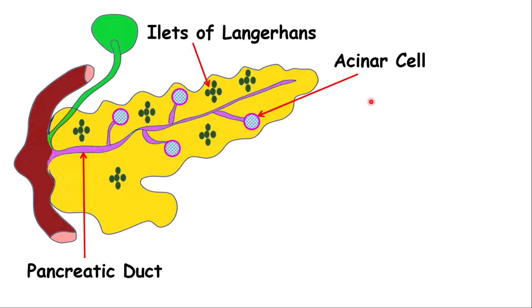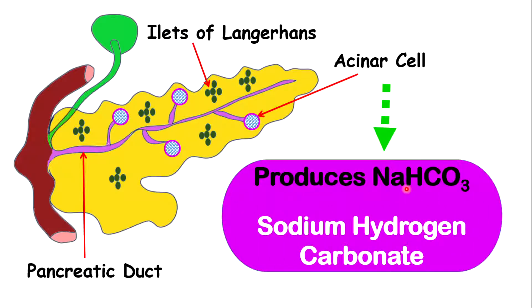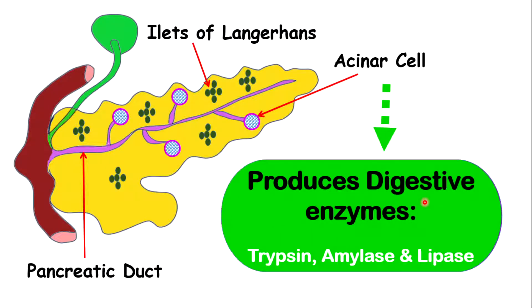The acinar cells are very important in assisting the digestion process — in particular, the digestion of fats. The acinar cells produce sodium hydrogen carbonate, which is important to neutralize the acidic content coming from the stomach. Because chyme is acidic, sodium hydrogen carbonate — being a base — will neutralize the acid. Otherwise, the enzymes produced by the pancreas will not be able to function. The pancreas produces specific digestive enzymes such as trypsin, amylase, and lipase, and these enzymes need a basic or alkaline condition to work effectively.